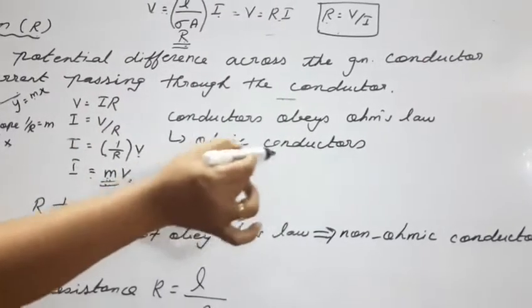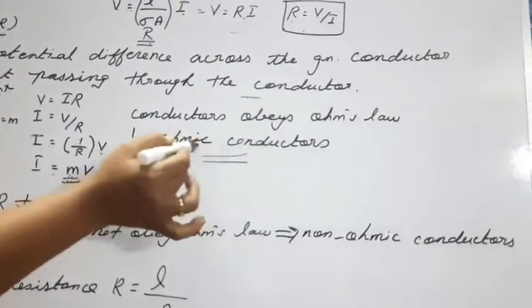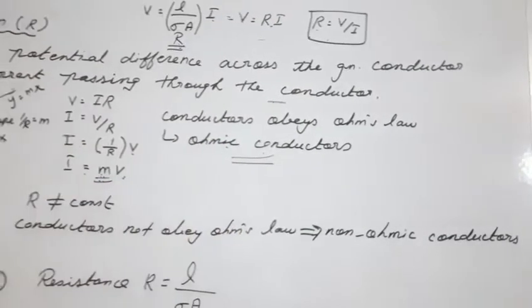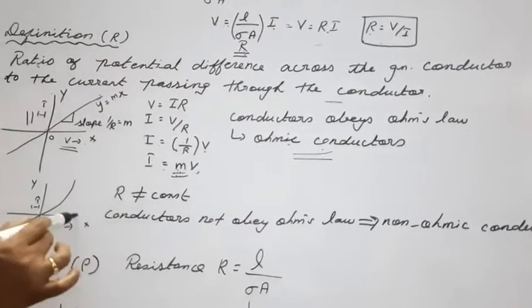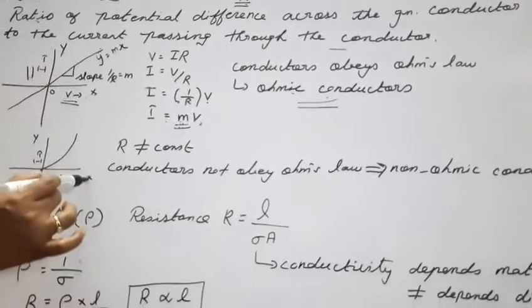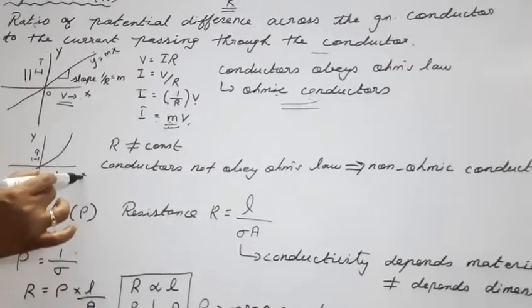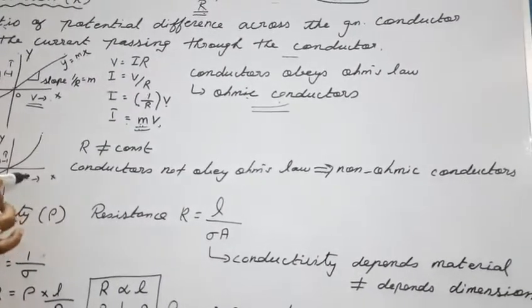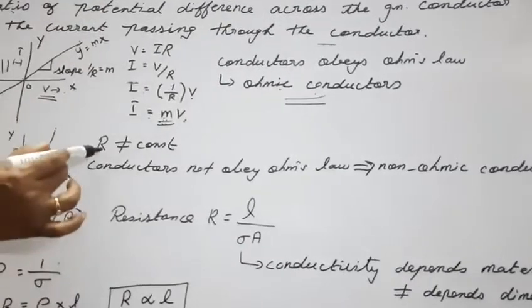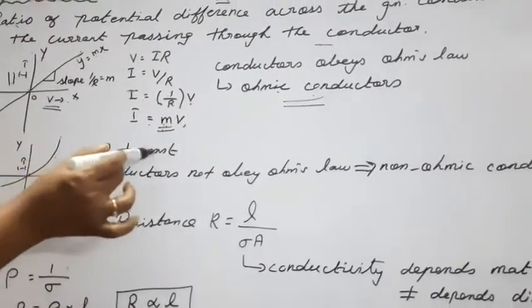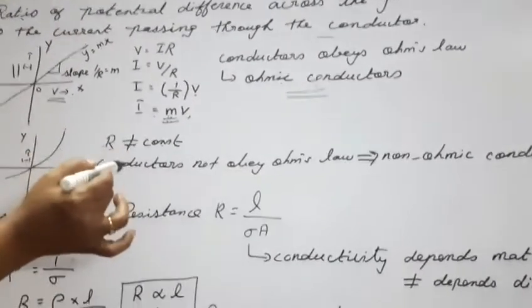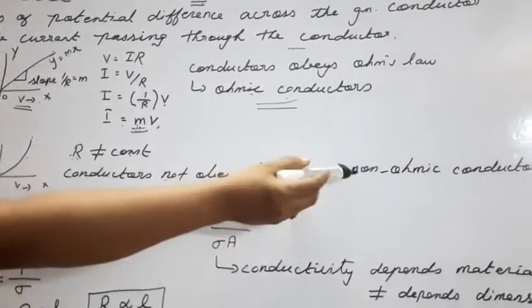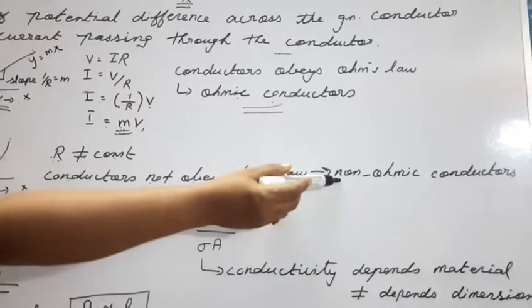If the graph has a parabola shape instead of a straight line, the resistance R is not constant and the conductor does not obey Ohm's law. These types of conductors are called non-ohmic conductors.